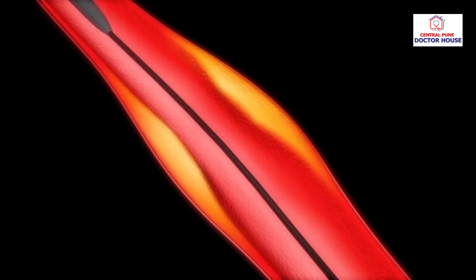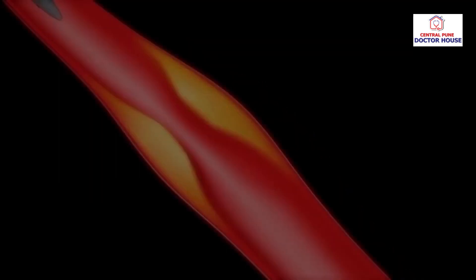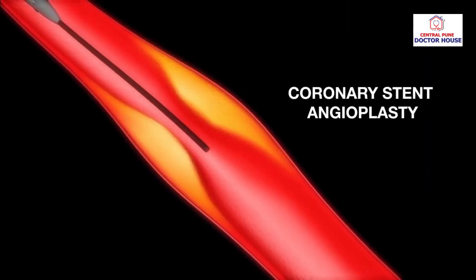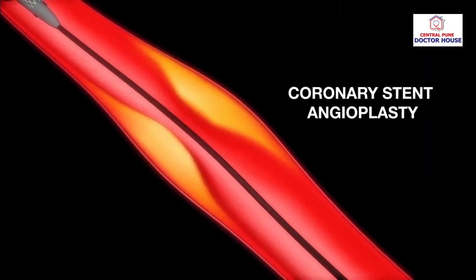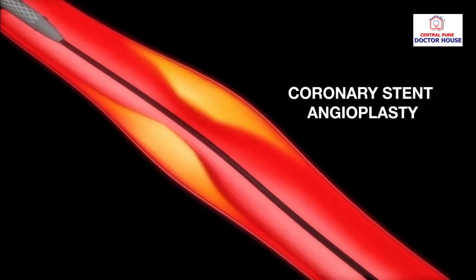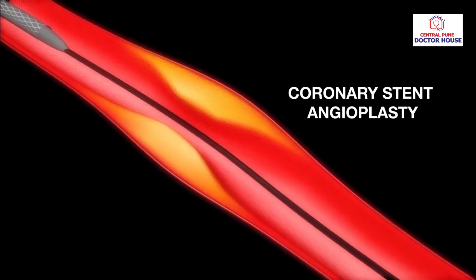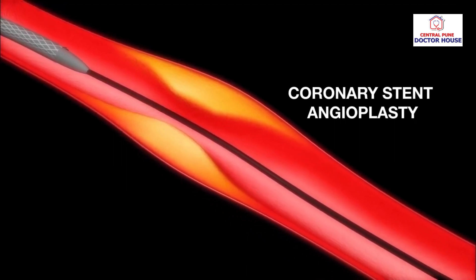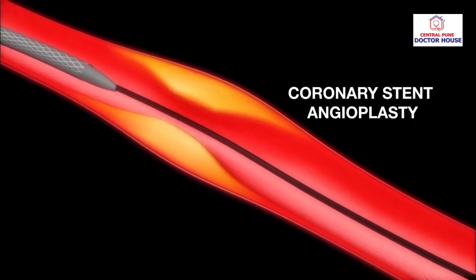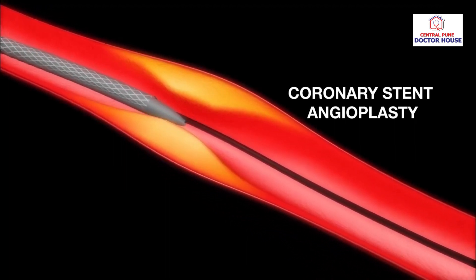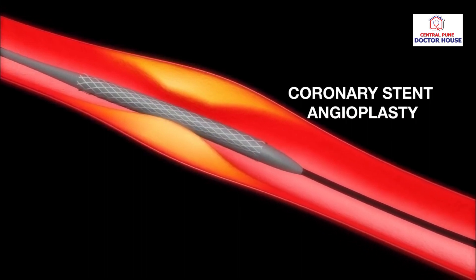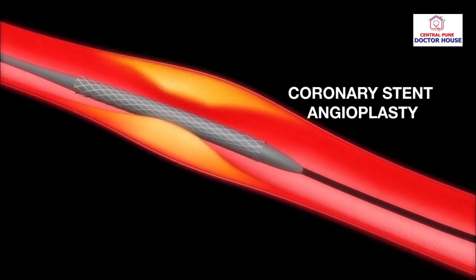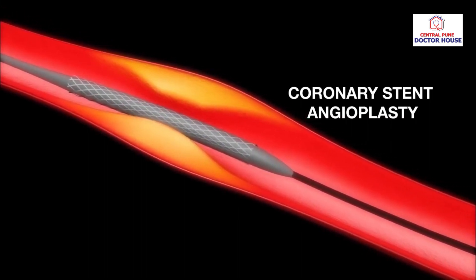The same treatment procedure is repeated in the case of multiple blockages. Most patients may also receive a coronary stent, which is a small tube made of wire mesh designed to keep the artery open once it has been treated. A collapsed stent is placed over the deflated balloon catheter as it is inserted into position.